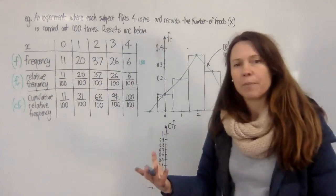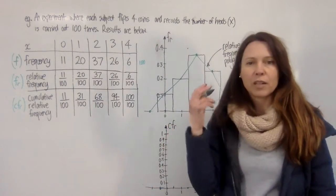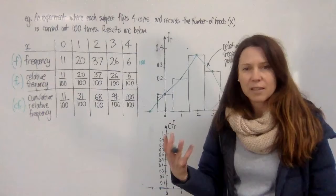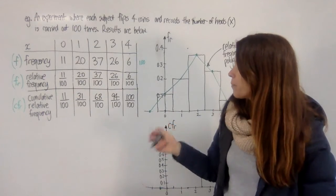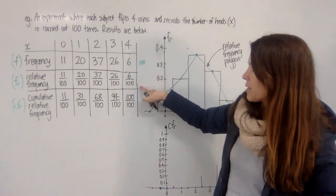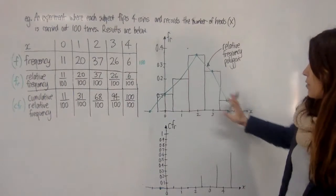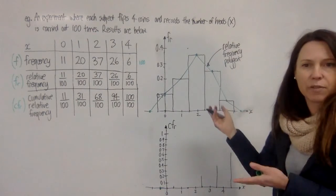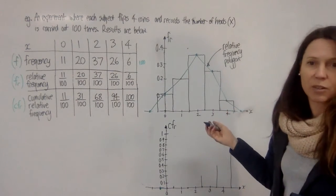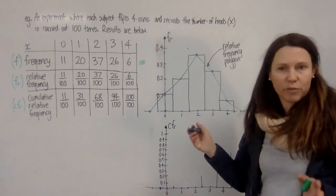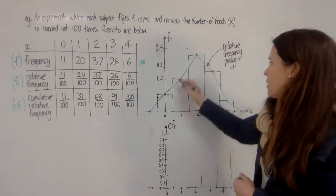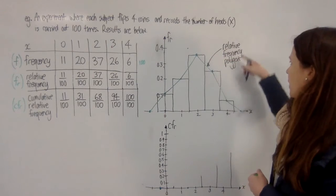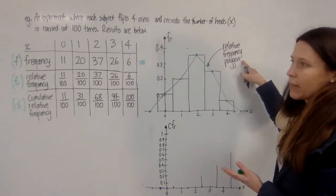So these relative frequencies then can easily be graphed and we might see a slightly different thing actually happening here, if it's a weighted coin, than what we expected when we were flipping fair coins. And we can join the tops of the columns up to make our relative frequency polygon like this.